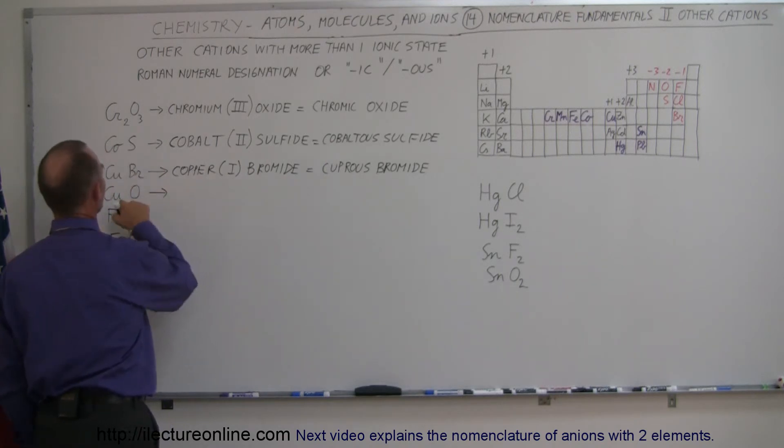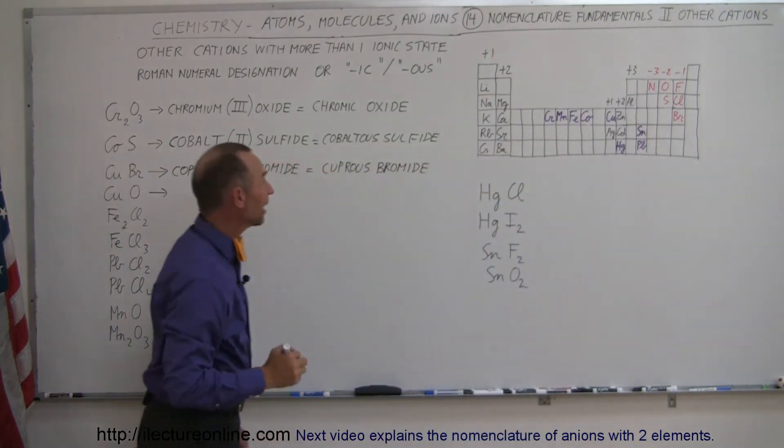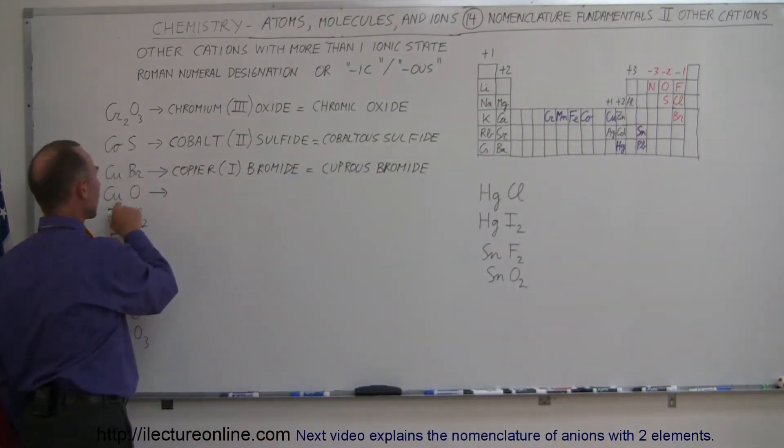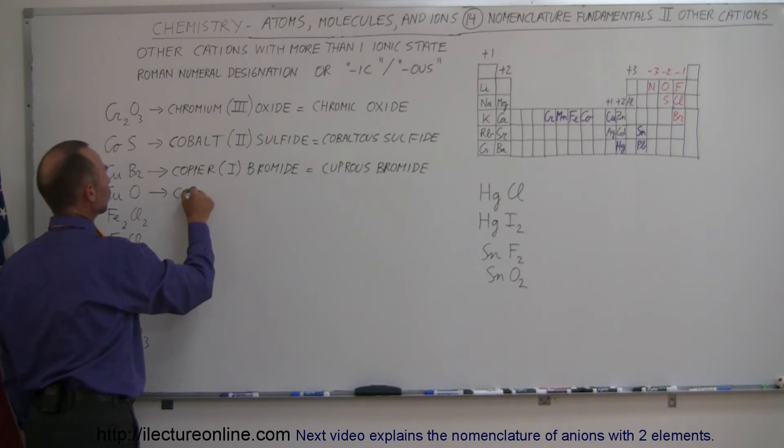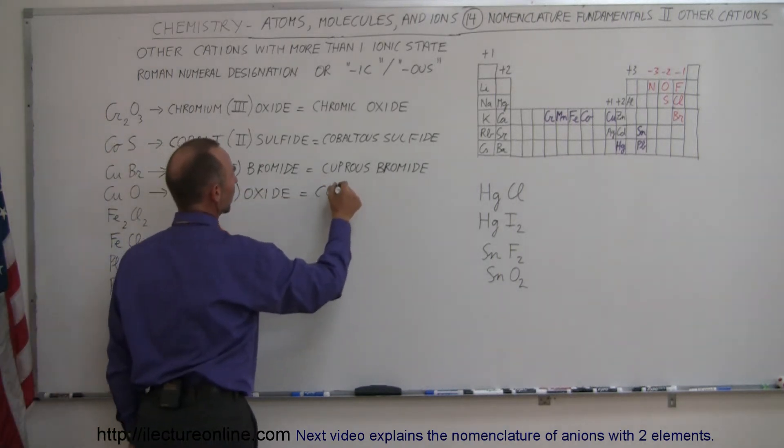And now we have copper and oxygen here, but oxygen has a minus two ionic state. That means copper here has to have a plus two ionic state, so this becomes copper two oxide, and so this becomes cupric oxide.